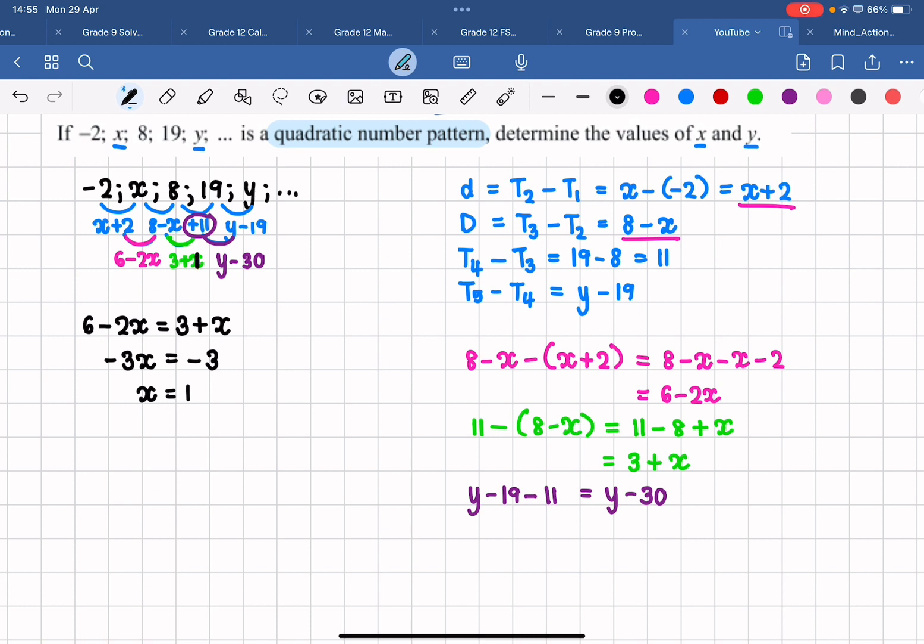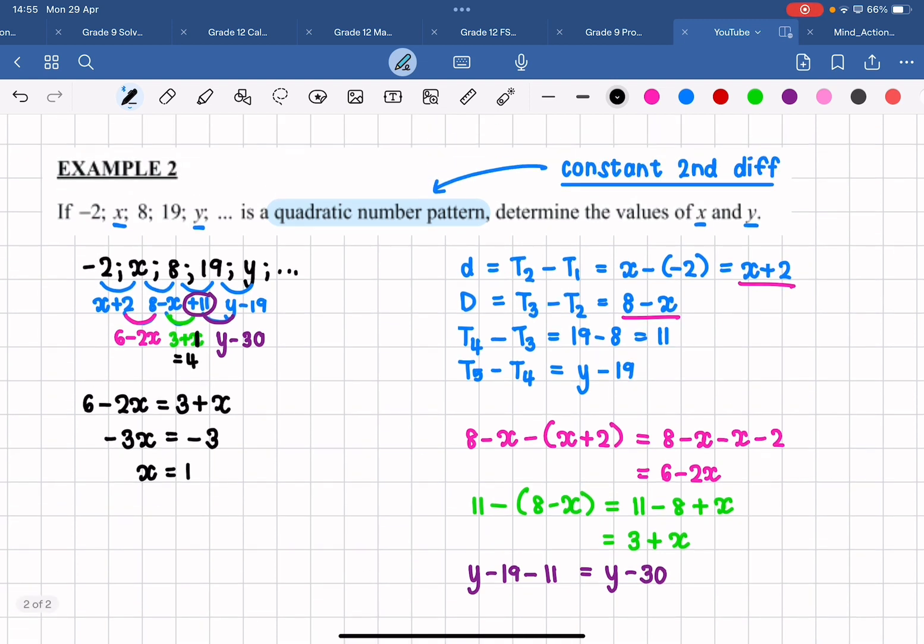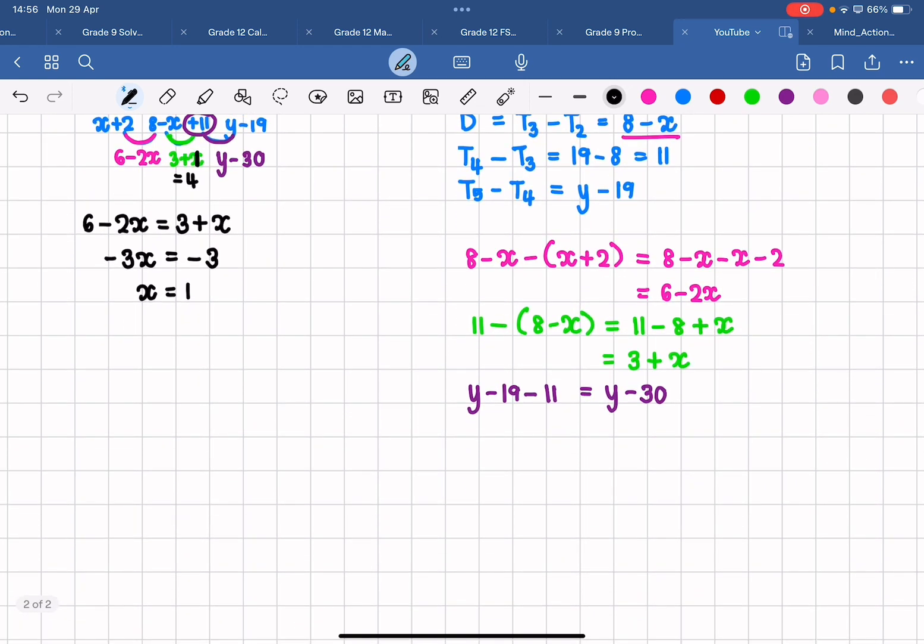Now we know that since x is equal to 1, this second difference here is actually equal to 4. And again, I know that my second differences are constant. So that means that these two second differences have to be equal to each other. So I can say that y minus 30 is equal to 4, so y is going to be equal to 34.